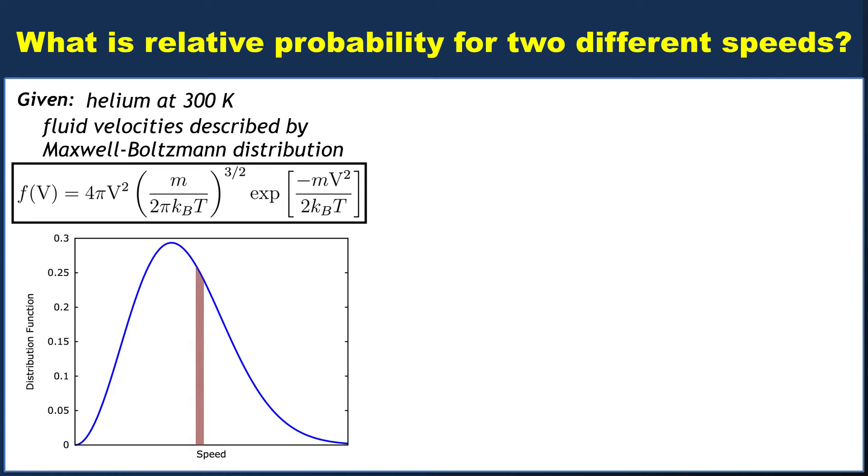Imagine that we want to compare this speed, represented by the red vertical bar, to this speed. Let's pick the average speed as that higher of the two speeds. If you plug in values from our analytic expression for the average speed computed in a different video, then you find for helium at 300 Kelvin it's 1260 meters per second.